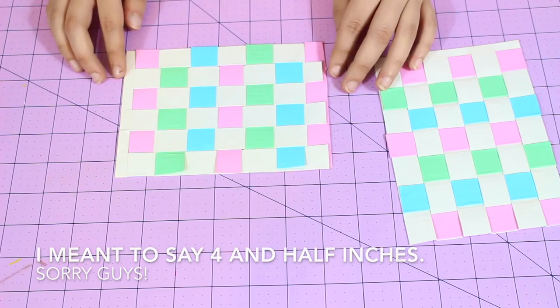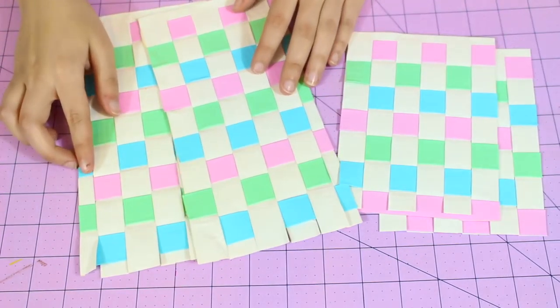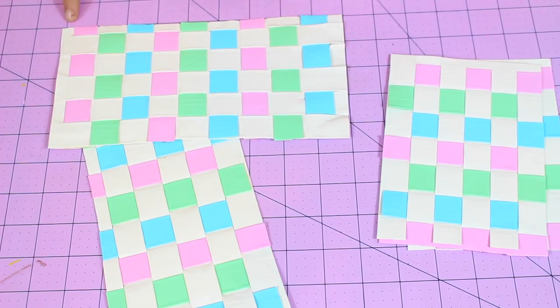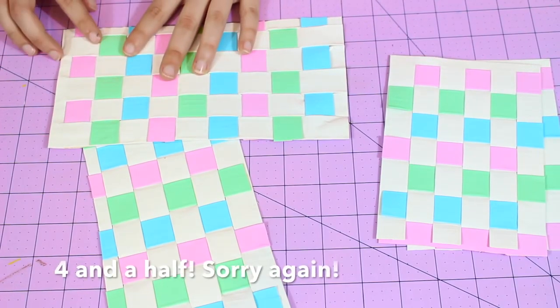You're also going to need your two side panels, and these will need to be 9 inches long and 5 and 1/2 inches tall.